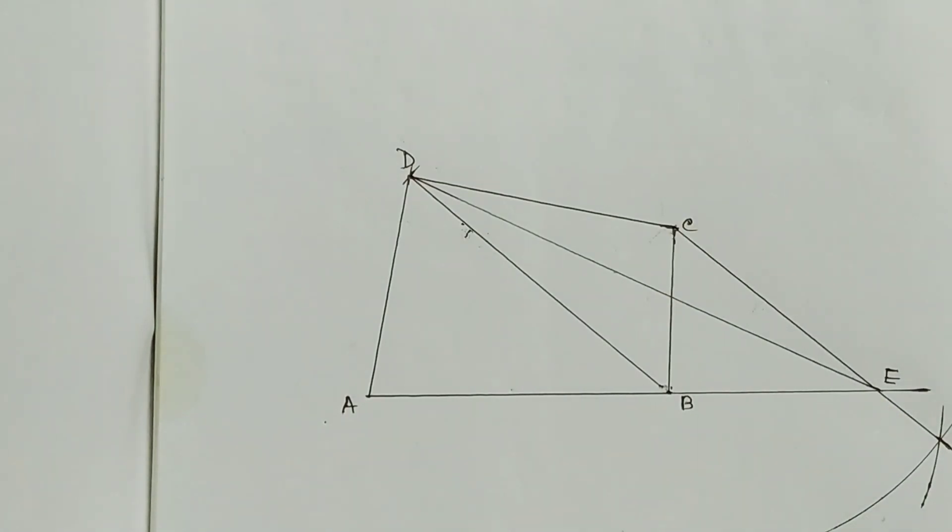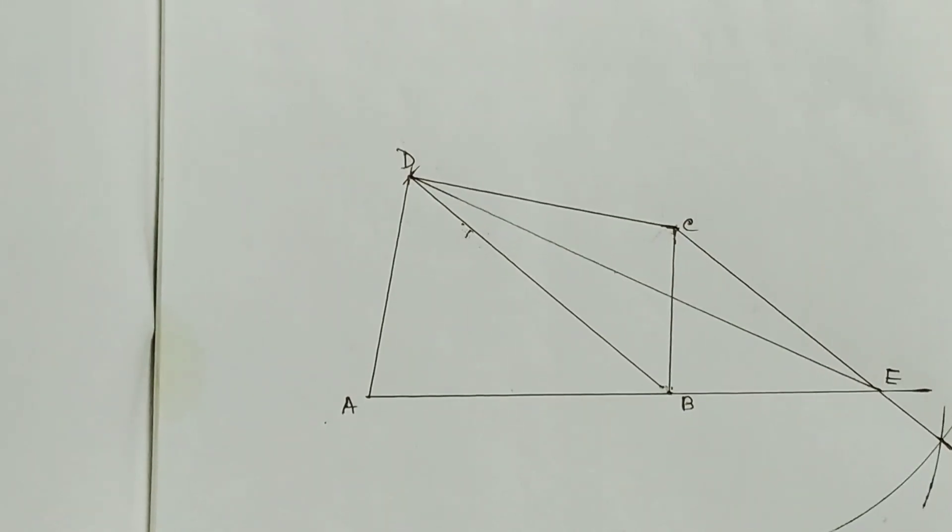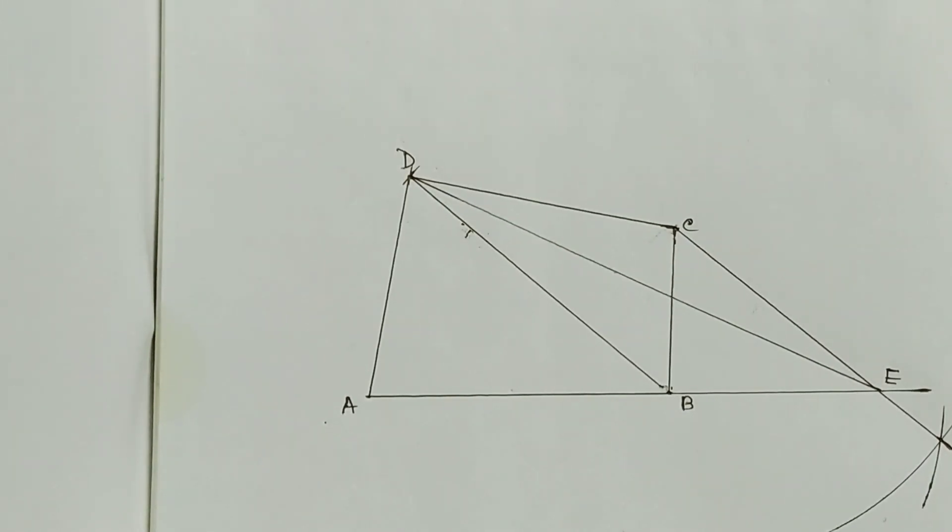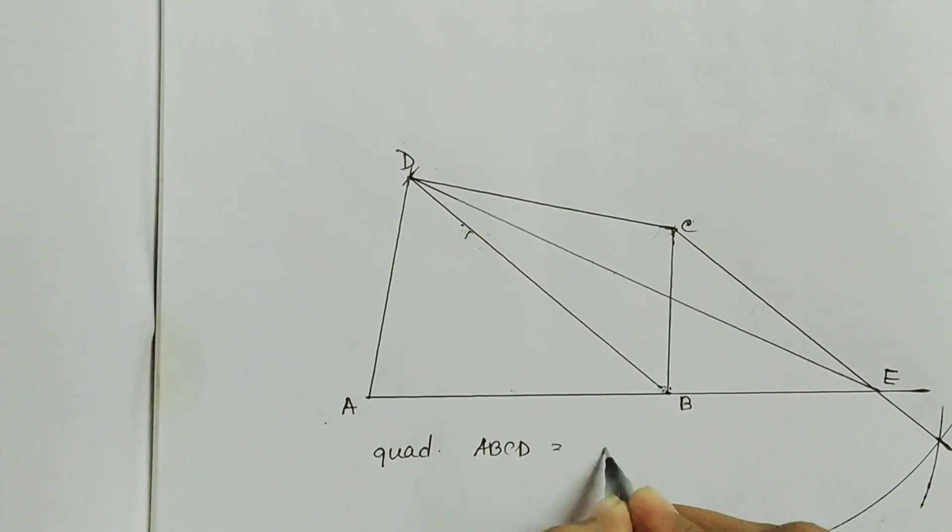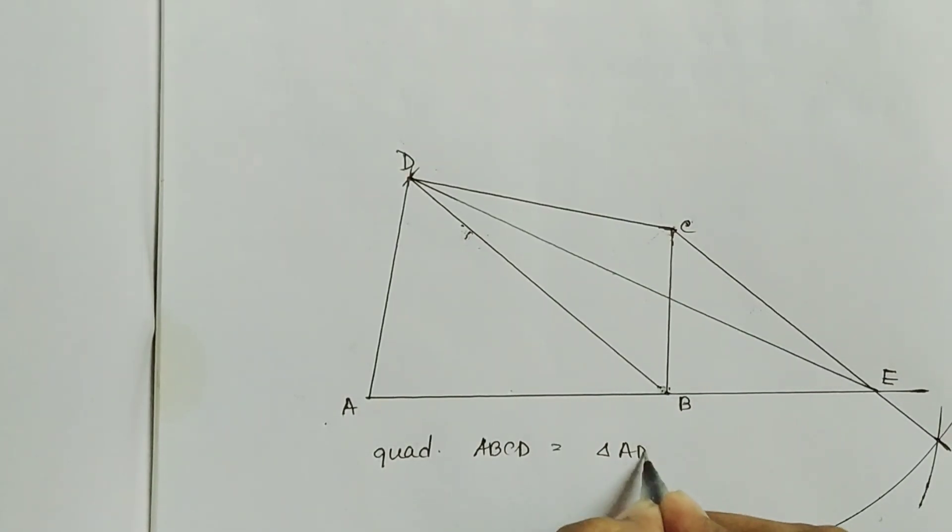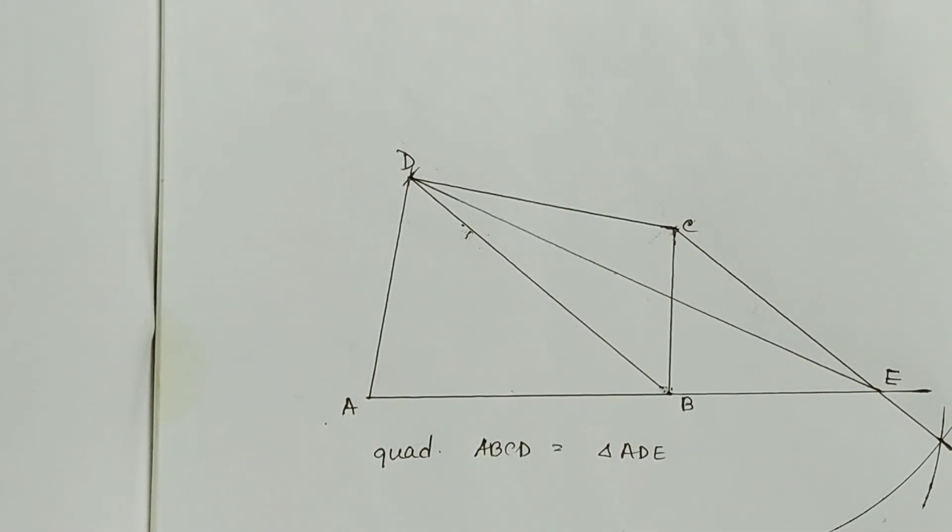So it is the total construction. Now here the area of the quadrilateral ABCD is equals to the area of the triangle ADE. That means quadrilateral ABCD equals triangle ADE.